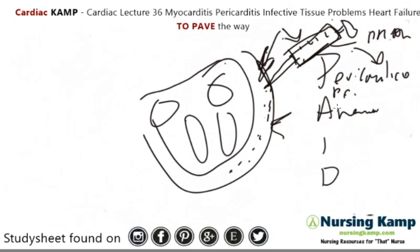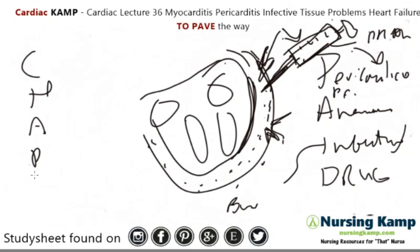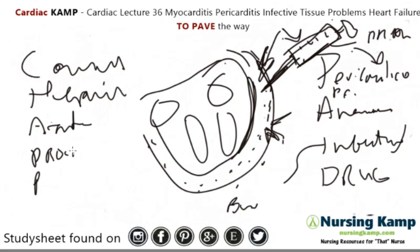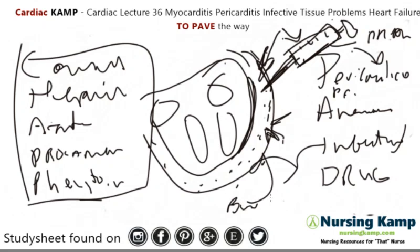Other causes include aneurysms, bacterial or fungal infections — something invasive occurring or infection already present in the pericardial fluid. Certain drugs and medications can also cause pericarditis, such as anticoagulants and phenytoin (Dilantin). These are all factors that can lead to pericarditis.